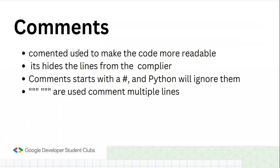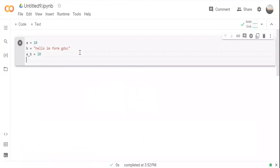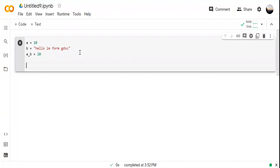Comments are a very helpful thing in coding. They help us to hide code from the compiler and make code more readable. Once you've coded a program, you put comments like a note — that helps another person to understand your code more easily.